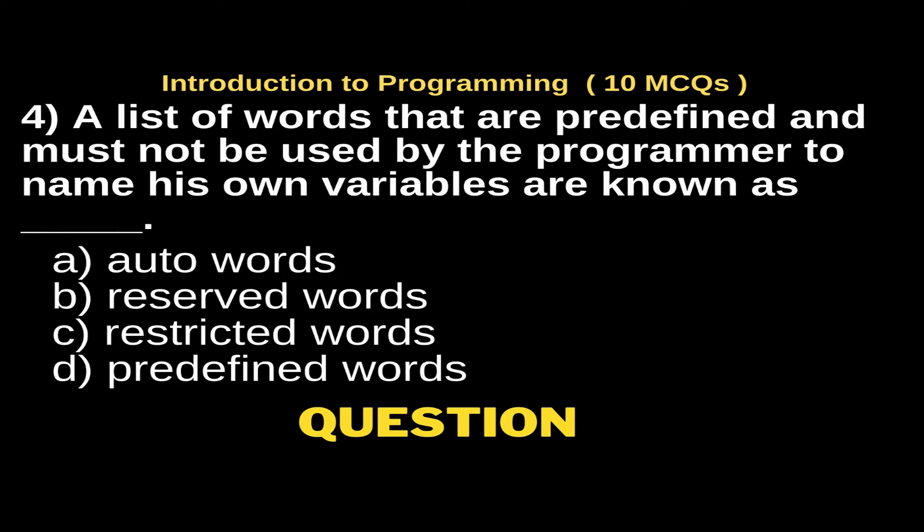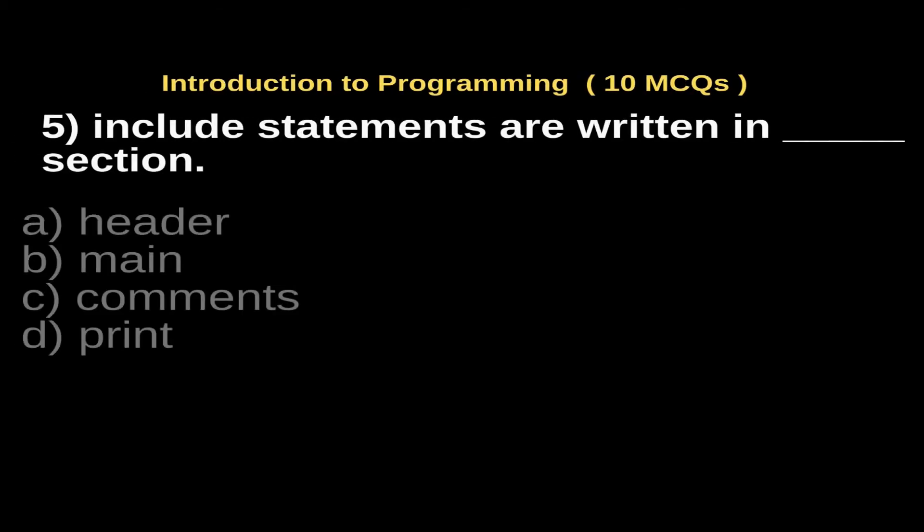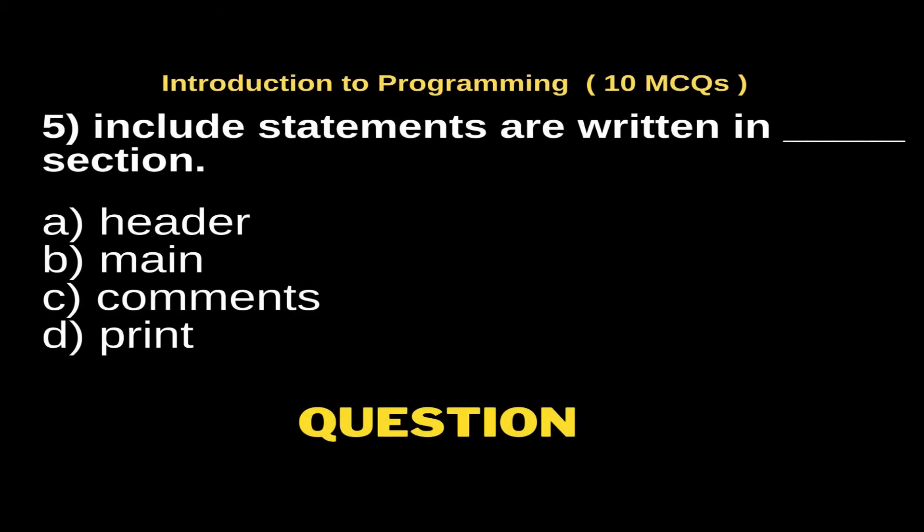A list of words that are predefined and must not be used by programmer to name his own variables are known as dash. Options: Option A, auto words; Option B, reserved words; Option C, restricted words; Option D, predefined words. And the right answer is Option B, reserved words.